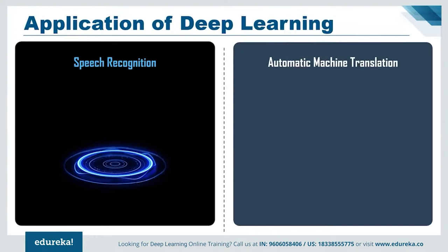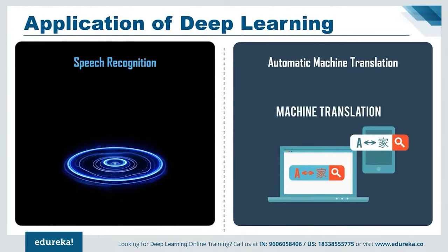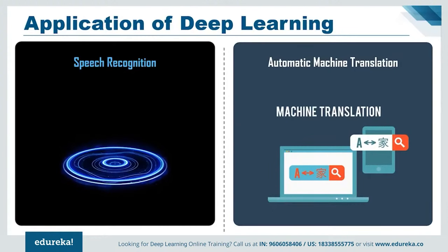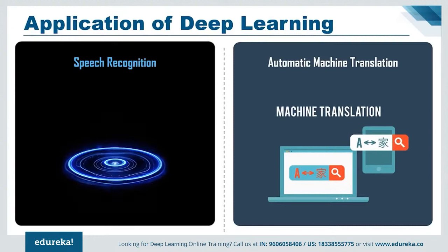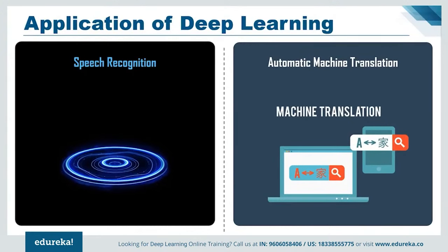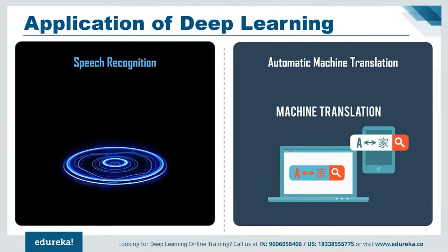Next on our list is automatic machine translation. Google can instantly translate between 100 different human languages, and the technology behind this is called machine translation. Over the past two years, with the help of deep learning, Google has totally revamped its approach to machine translation in Google Translate. Deep learning researchers who know almost nothing about language translation are putting forward relatively simple machine learning solutions that are beating the best expert-built language translation systems. Text translation can be performed without any pre-processing of the sequence, allowing the algorithm to learn dependencies between words and their mapping to a new language. Stacked networks of large recurrent neural networks are used to perform these translations.